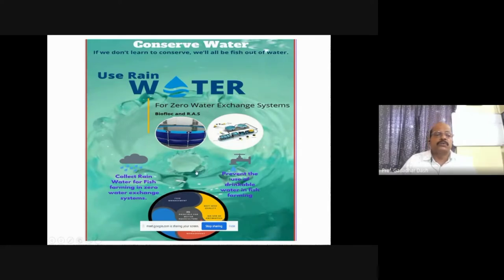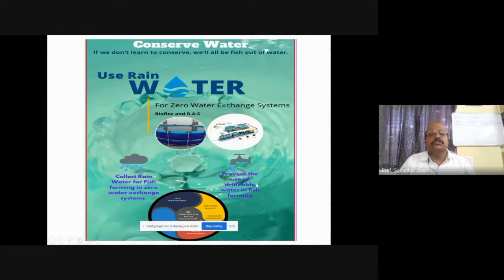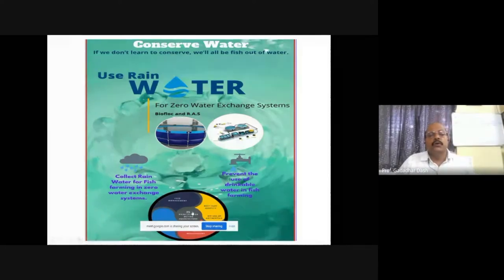In many areas including Hyderabad, rainwater harvesting is being made mandatory — the future depends on it. Drinkable water should not be used for fish farming. We can recycle water, use derelict waters, and should not disturb groundwater sources. We should conserve and reserve water, because the excess rainwater currently flowing to the ocean could be of tremendous use for aquaculture.